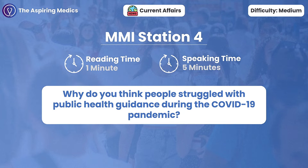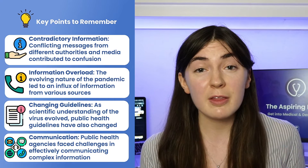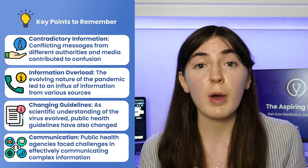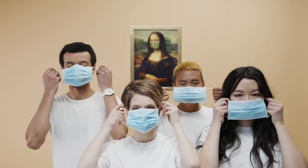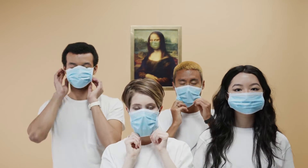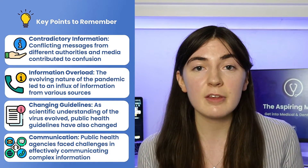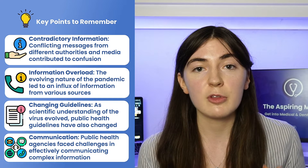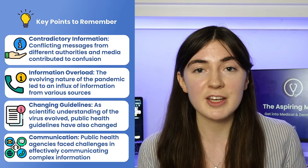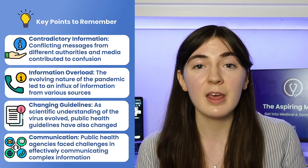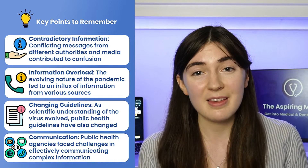Why do you think people struggled with public health guidance during the COVID-19 pandemic? I think to start with there was an issue with the actual messaging around the guidance. There was a lot of mixed messaging and unclear messages coming from the government — for example, with masks: when, where, for how long, and in what situations people should wear them. There was also the tiered system with restrictions in certain areas, and people were quite unclear about which tier they were in and what rules applied.